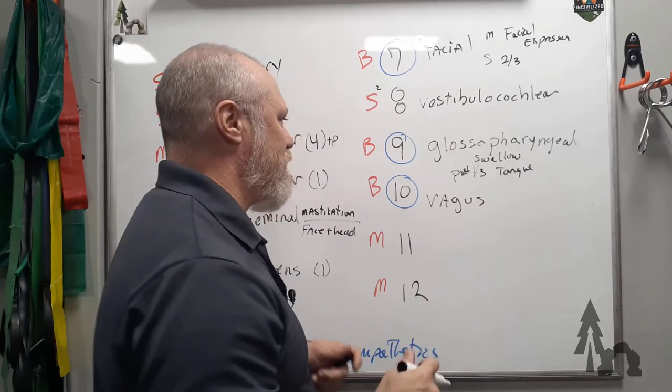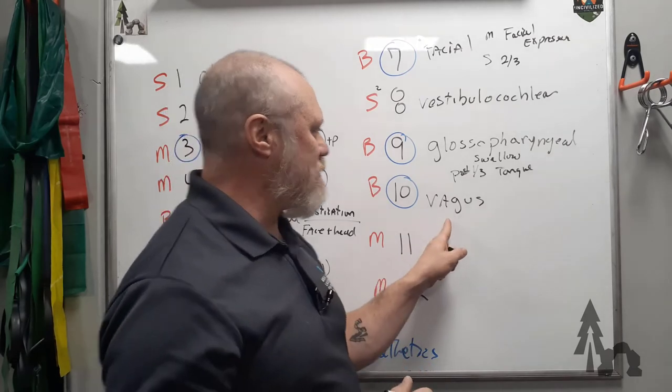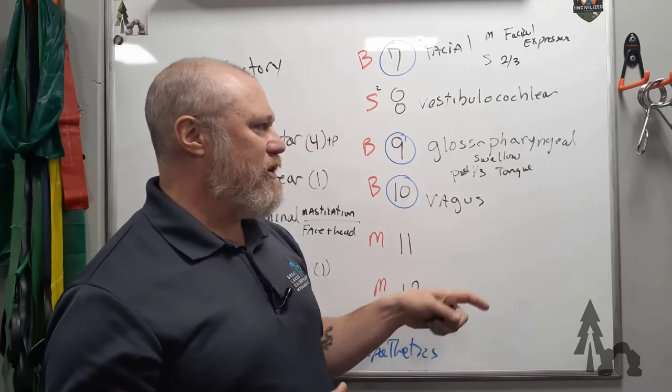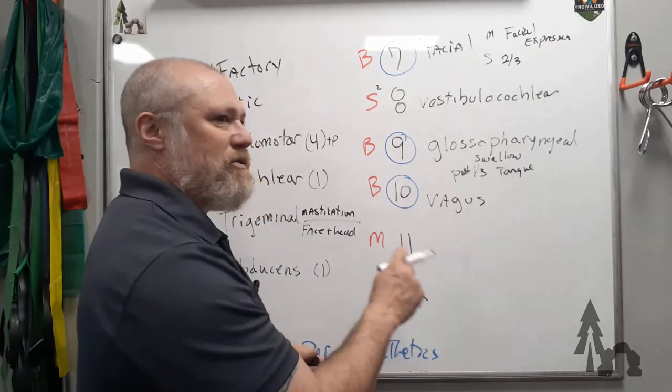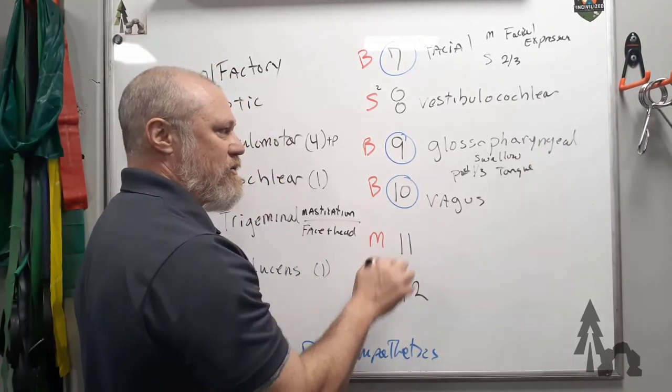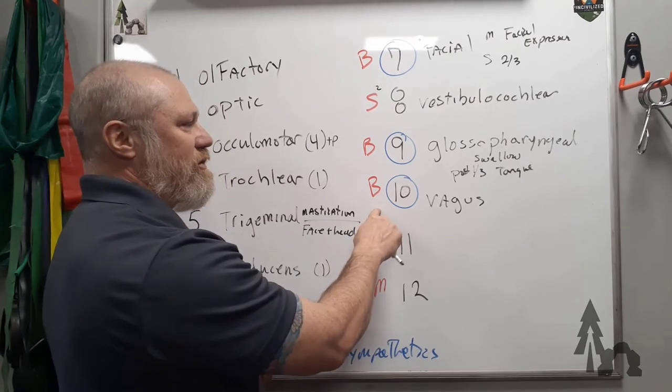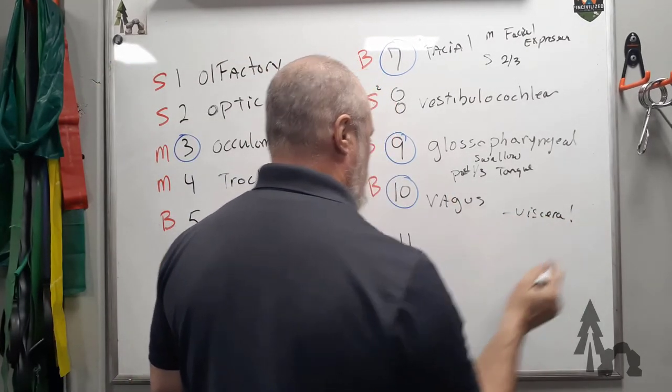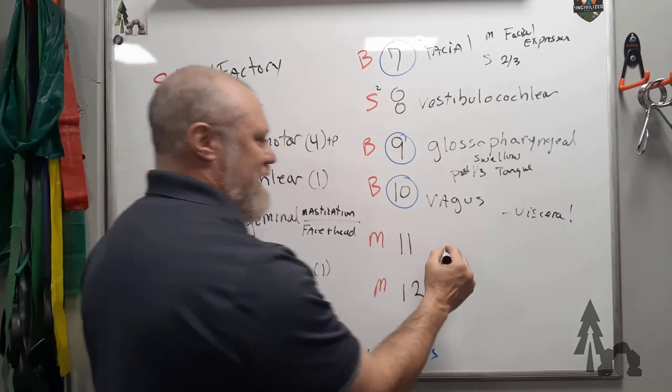Named because, like a vagabond, it wanders all over. We'll talk about some of its main branches like the superior laryngeal and recurrent laryngeal nerves and the pharyngeals in a specific video with the vagus nerve. Parasympathetic fibers, think mostly viscera.